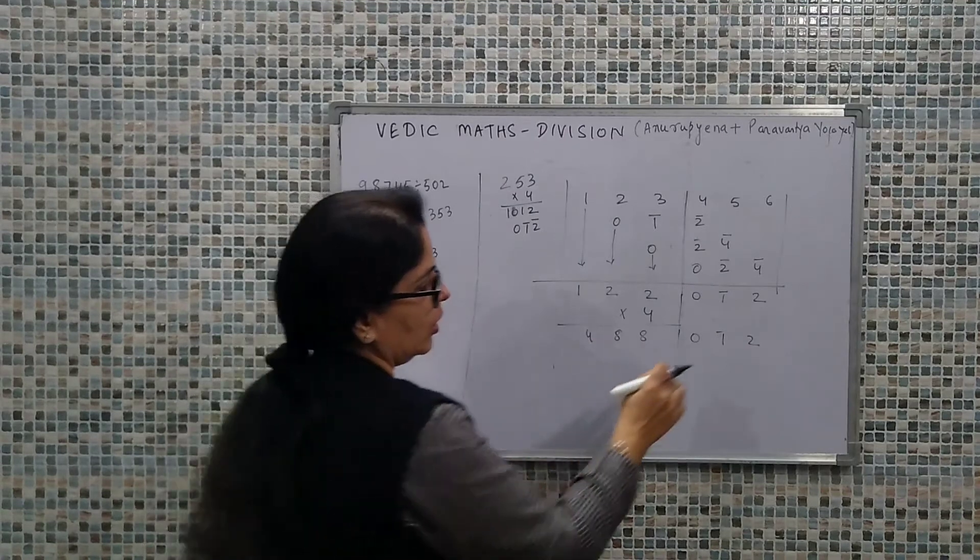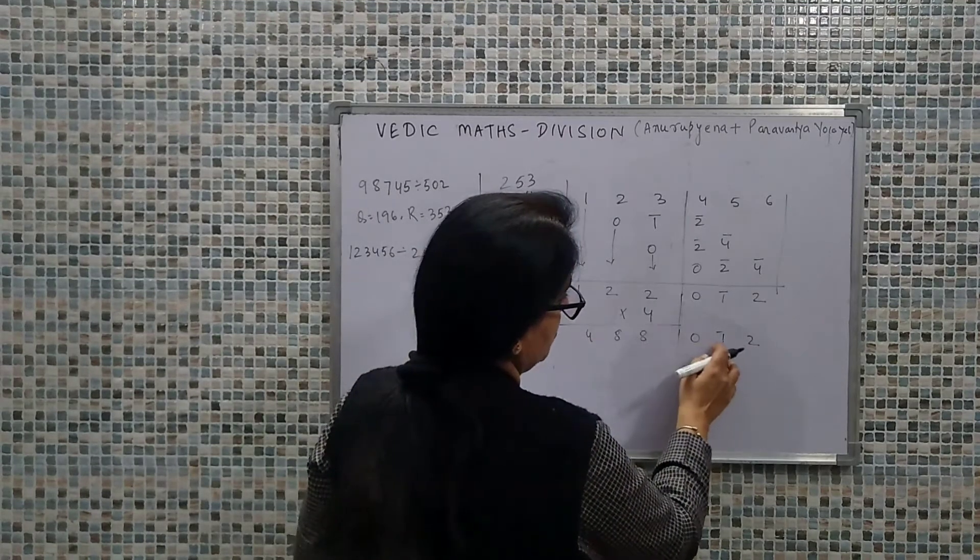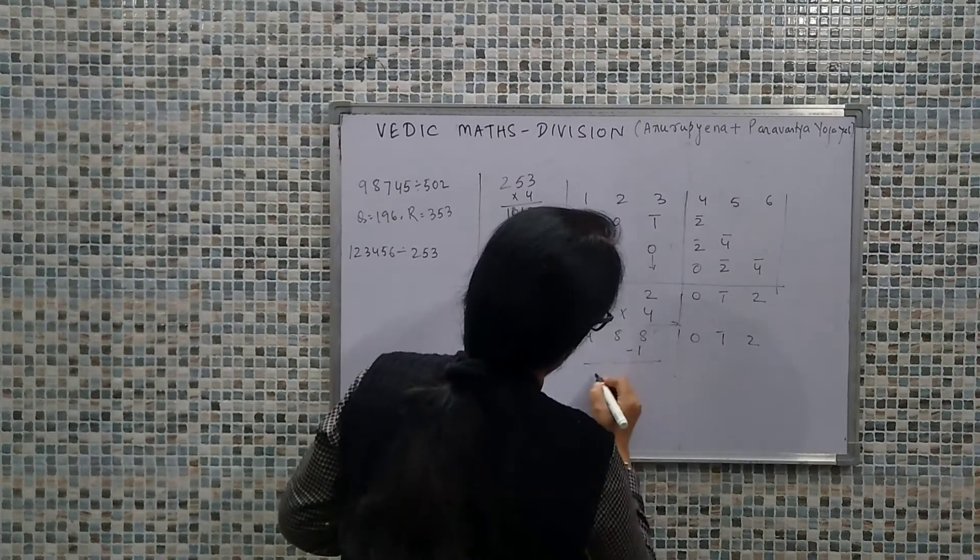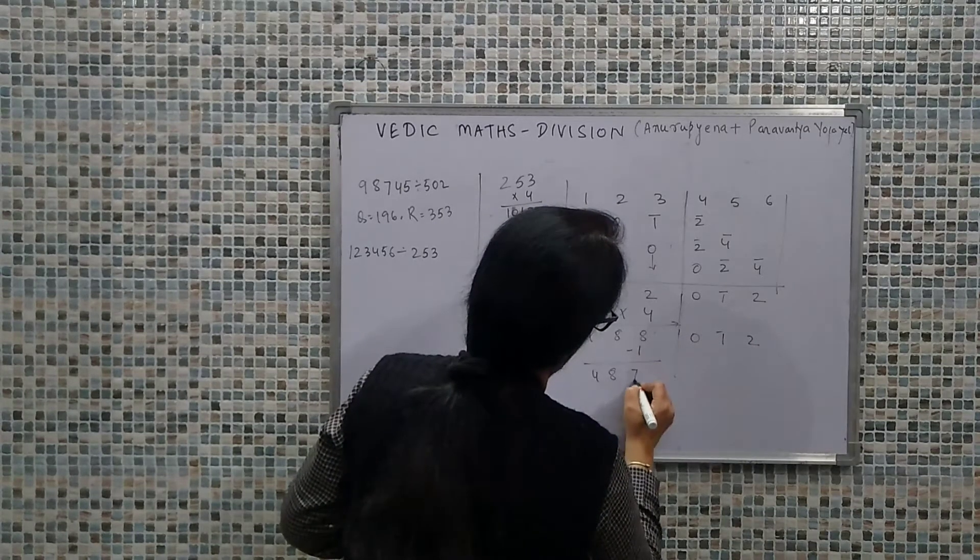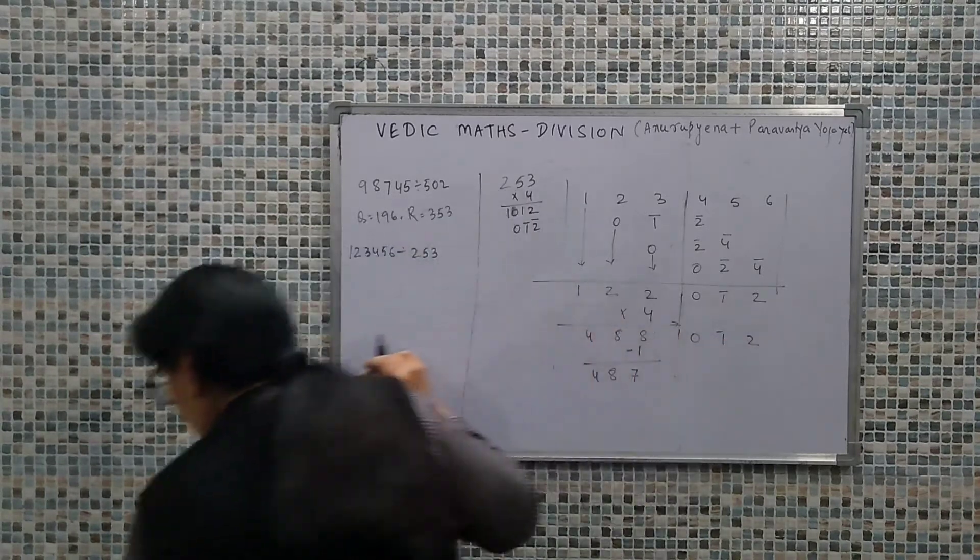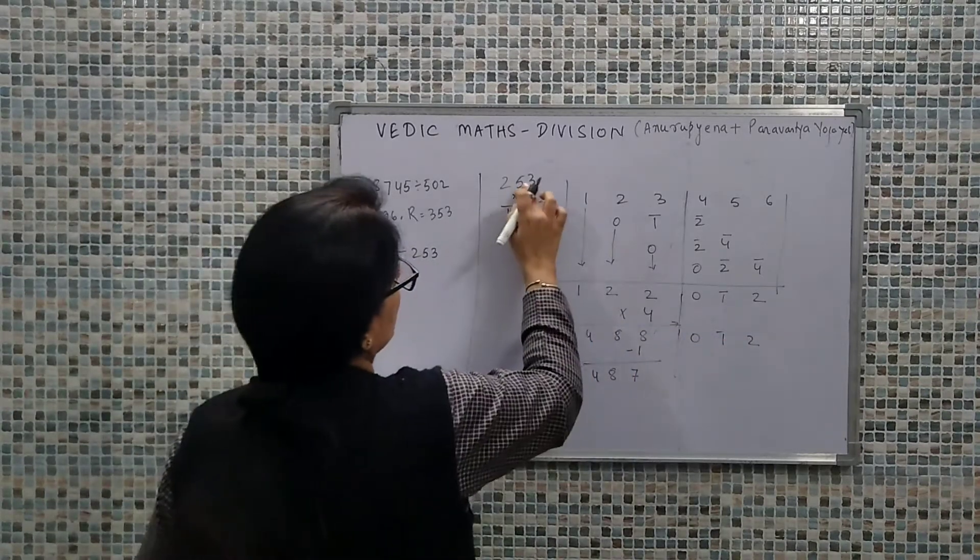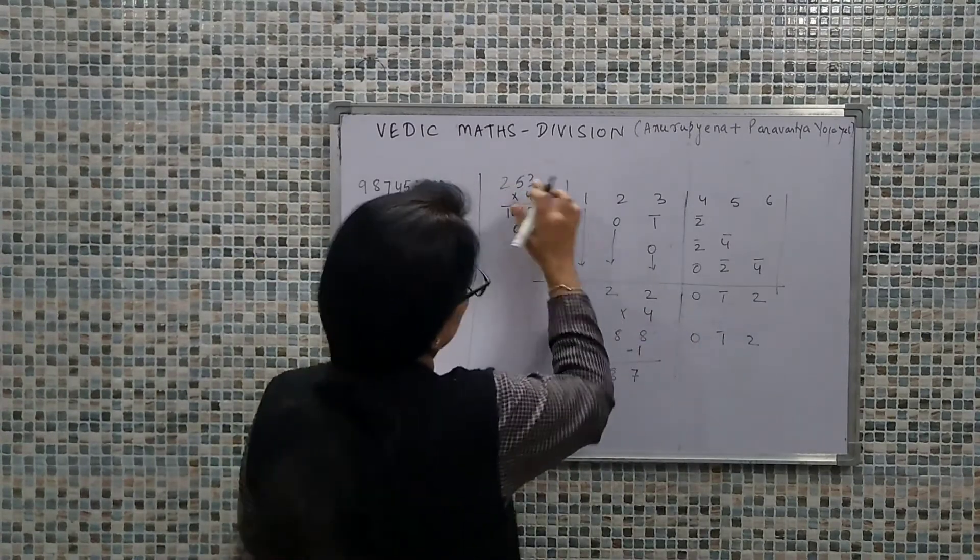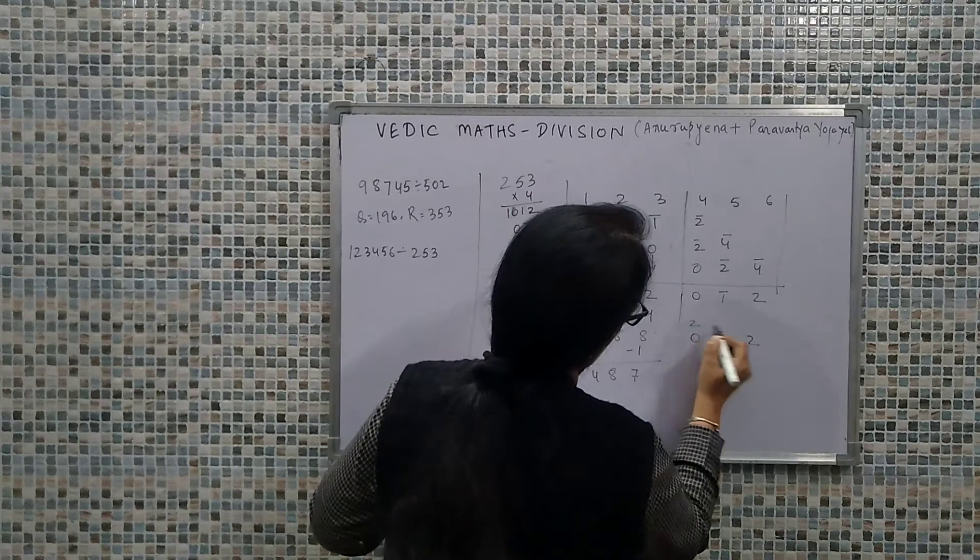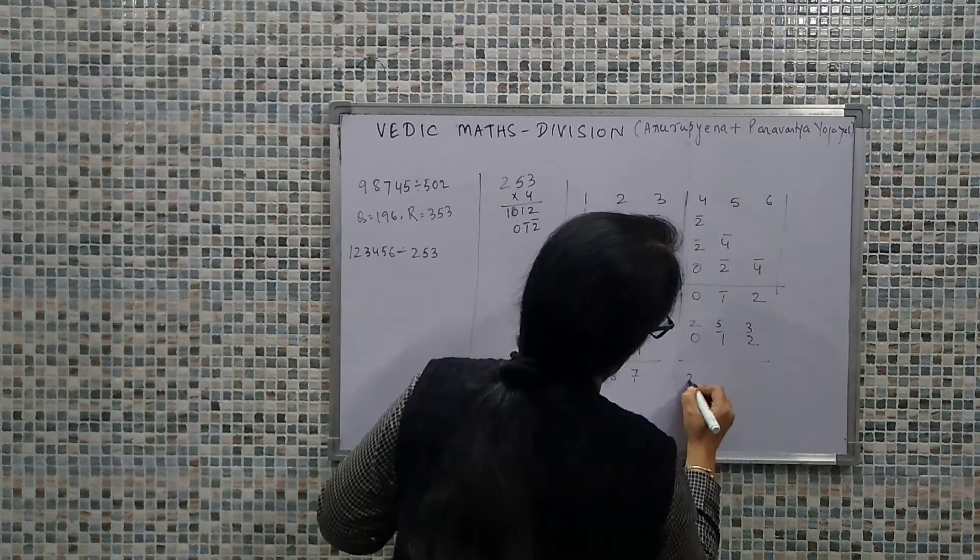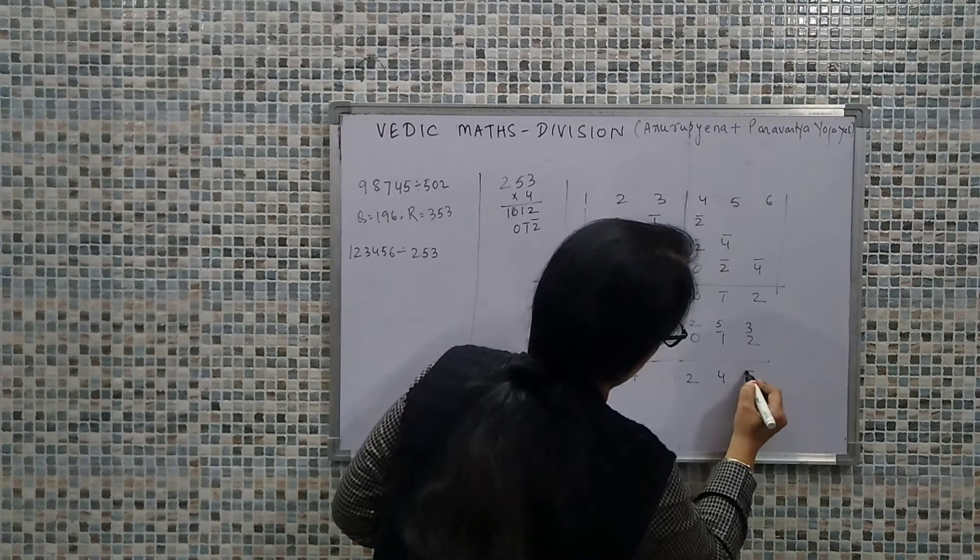Next thing, this number is negative. We can't borrow from here. I'll borrow 1 from here. So the moment I'm borrowing 1 from here, this becomes... This will be considered as our divisor value. Our divisor is 253. I'll write 253. So this becomes 2 and 5.